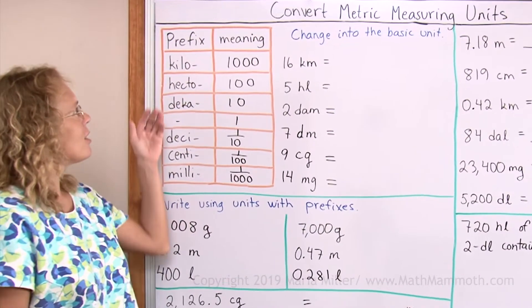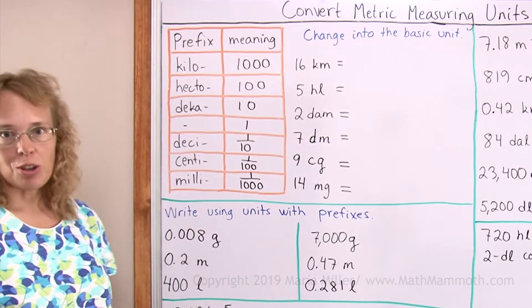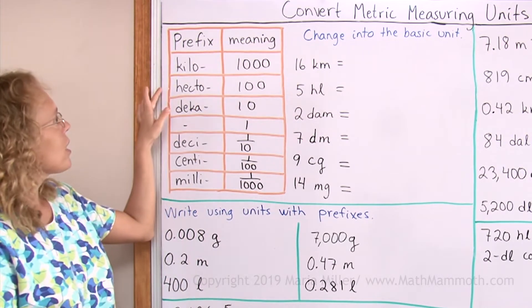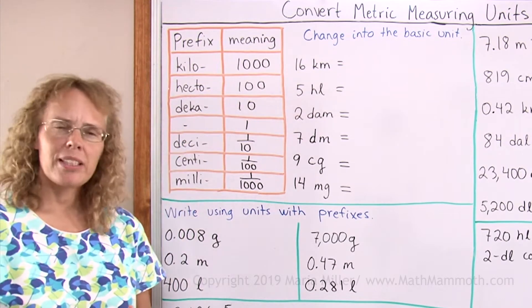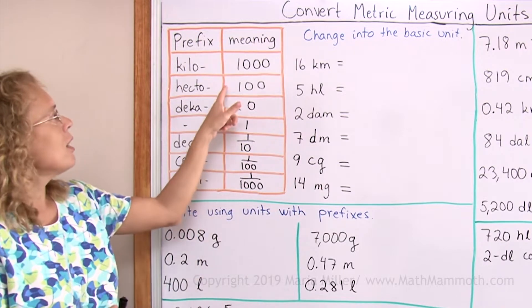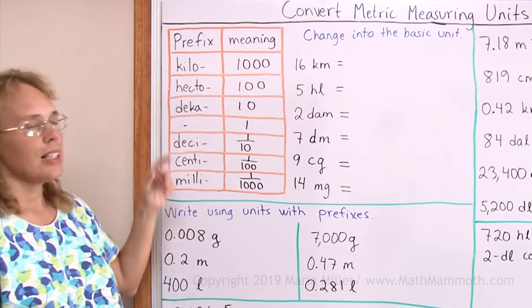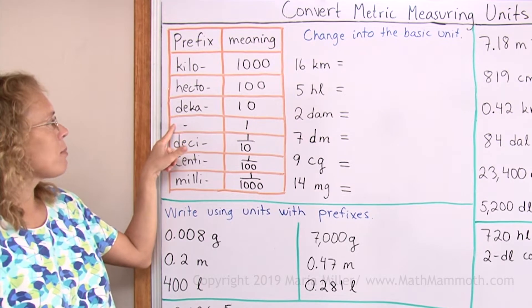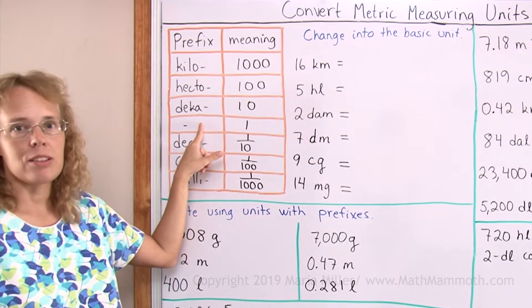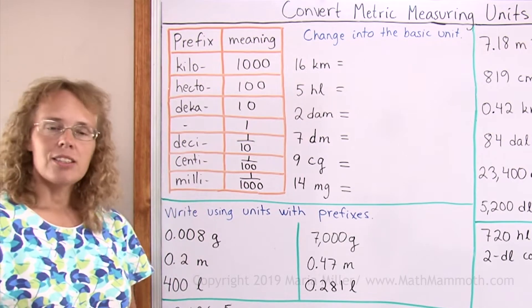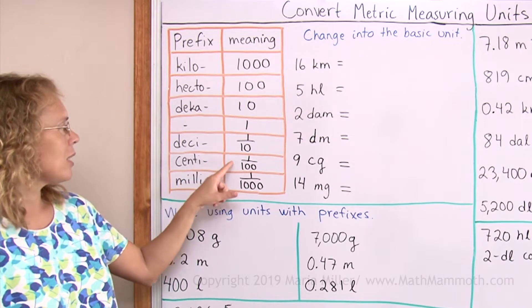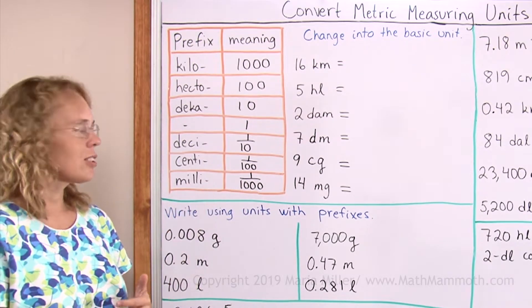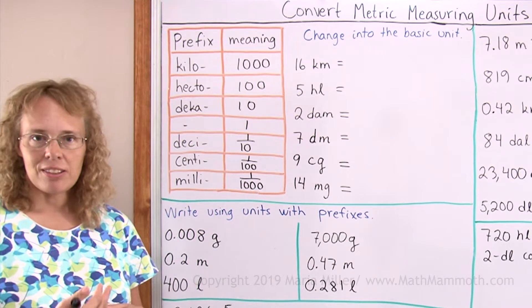I wrote here the list of prefixes we use in metric measuring units. You should already be somewhat familiar with these. Kilo means thousand — for example, kilogram, kilometer. Hecto means hundred; that is not used often, but hectolitres are used, so one hectolitre means 100 litres. Deca is not really used in practical life, but decameter would mean 10 metres. Then here is the basic unit, whether gram, litre, metre, or whatever. Deci means one-tenth, so decimeter is one-tenth of a metre. Centi means one-hundredth; centimeter means one-hundredth of a metre. Milli means one-thousandth, so one milliliter is one-thousandth of a litre.